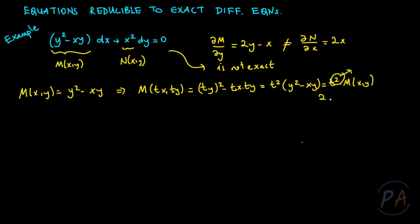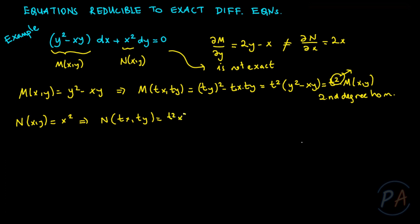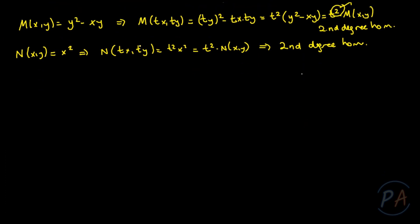Now let me check N. N of xy equals x², and N of tx, ty equals t²x², which is t² times N of xy. So N is also a second degree homogeneous function. The homogeneity degrees of both functions are the same, so I can write an integrating factor — let me call it lambda of xy instead of mu.